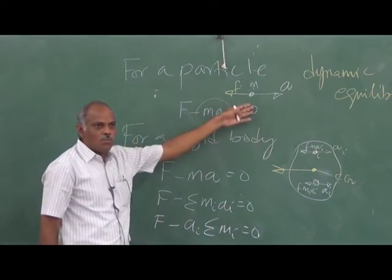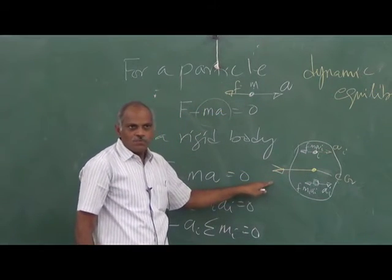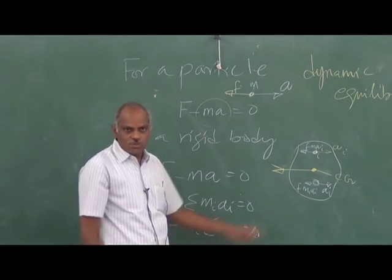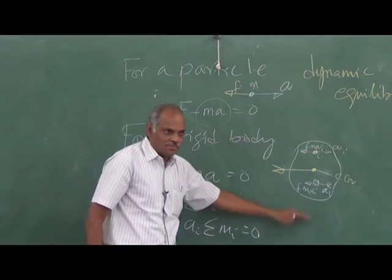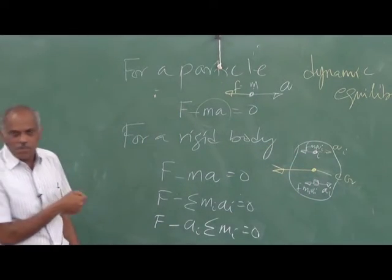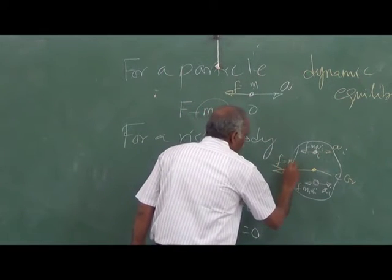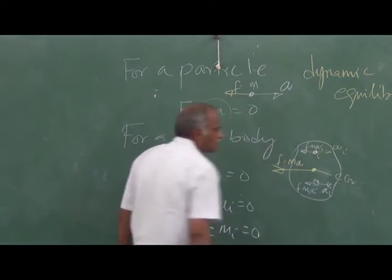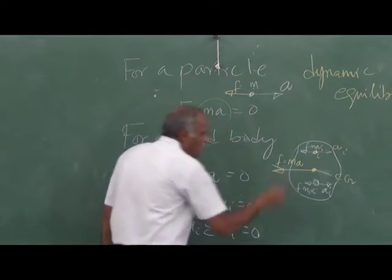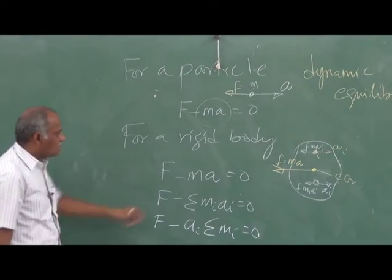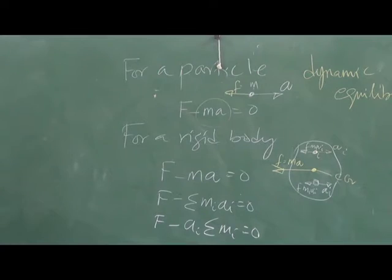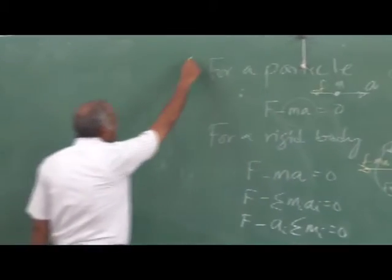When introducing an inertial force to solve the problem, you cannot introduce it anywhere — you have to introduce it through the center of gravity of the rigid body. This F equals M times A passes through the CG. This is the situation for a translating body — a body undergoing pure translation. This is what was discussed last class.